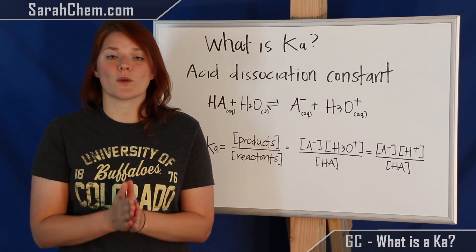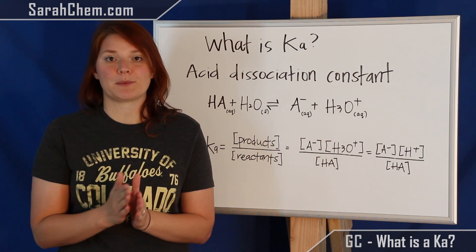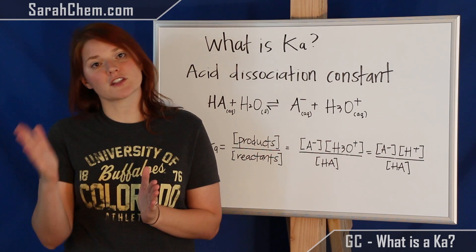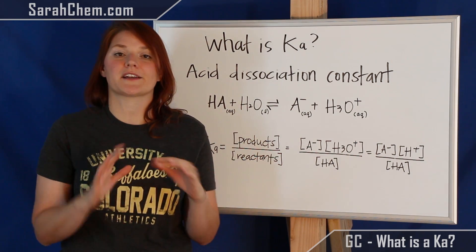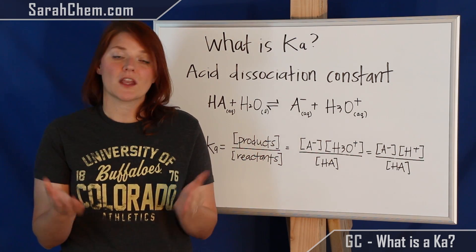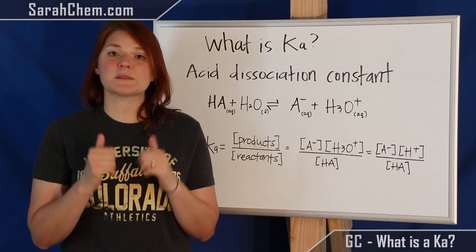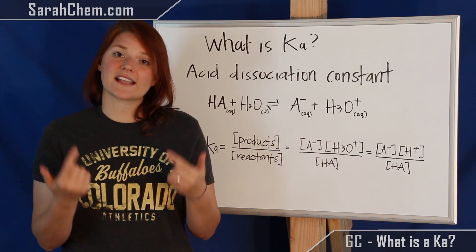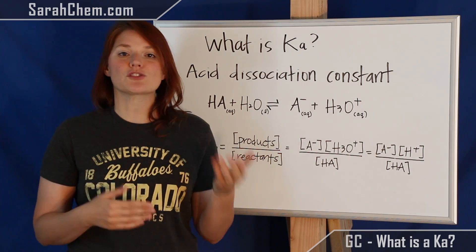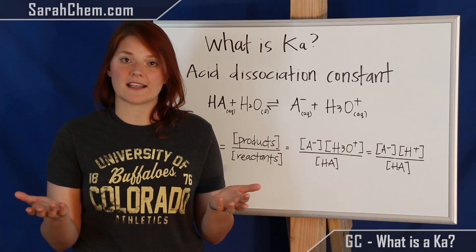So remember, as all K's go, this is telling us about the equilibrium position. So it's telling us how far to the product side or the reactant side our particular reaction is going. Now when we're talking Ka, this is specific for acids, and this Ka value can actually tell us how strong or weak an acid actually is.